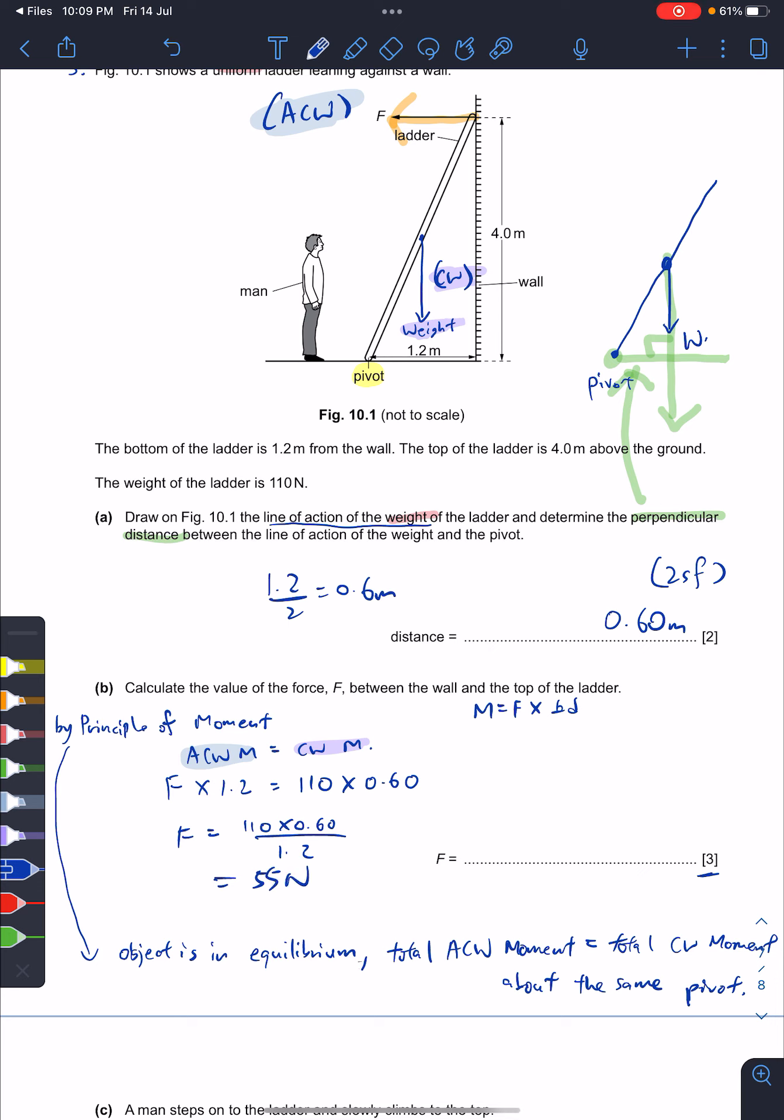110 times 0.60 divided by 1.2 equals 55 newtons. So the answer is 55 newtons. Then you might be wondering - it looks very simple, how come it's three marks? Because when you write 'by principle of moments, your clockwise equals anti-clockwise,' this is really equivalent to one mark. One mark for showing you know this definition and applying it, next one mark, and the last one mark.